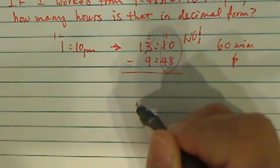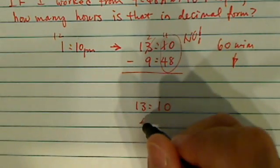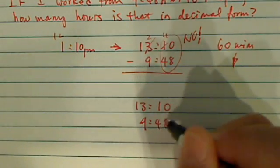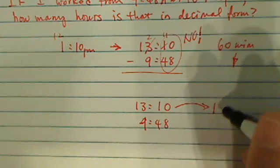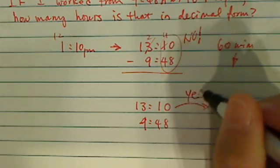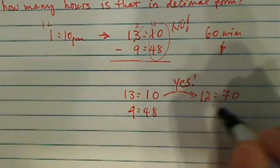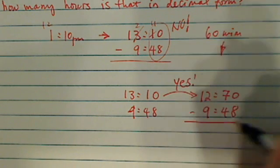So what you need to do is this: once you turn it into 13:10, you want to try to subtract 48 here. What you need to do is actually add 60, so it's 12:70 here. This is what you need to do: 12:70 minus 9:48. Now you have enough to cover.